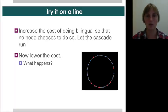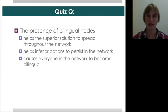So, see if you can answer this quiz question, which is, what is the presence of the bilingual nodes do? Does it help the superior solution to spread throughout the network? Or does it help inferior options to persist in the network? Or does it cause everyone in the network to eventually become bilingual?